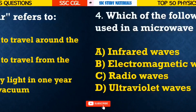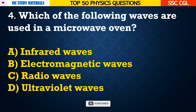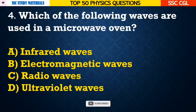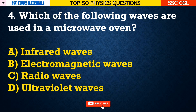Question number 4: Which of the following waves are used in a microwave oven? — Answer B. Electromagnetic waves.